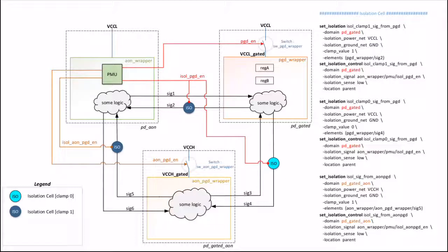Now comes the tricky part — what about signals between the two power gated domains? Specifically sig3 and sig4. If you remember, logic inside the AON PGD wrapper can be power gated but will not be power gated when the PGD wrapper is powered on. Thus sig3 can never have an unknown value when the PGD wrapper is on. But sig4 can become unknown when the PGD wrapper is power gated while the AON PGD wrapper is on. So we have to clamp sig4, and here we have decided to clamp it to 0. Each gated domain has a different isolation control — this is the isolation control for pdgated while this is the isolation control for pdgatedaon — so that if one domain is power gated, the isolation cells for that domain are clamped to their isolation value.